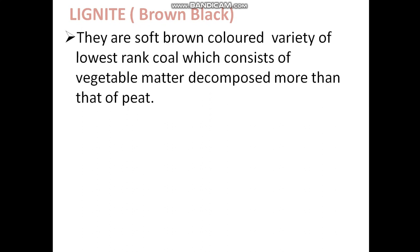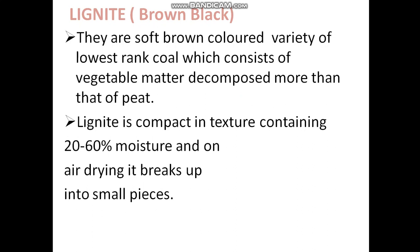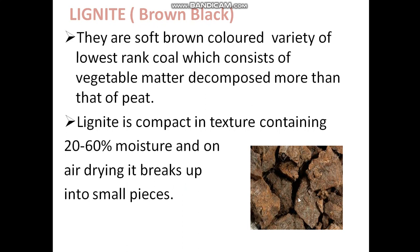This was all about peat. Next, let's look at lignite. Lignite is brown-black — a soft, brown-colored variety of the lowest rank coal, which consists of vegetable matter decomposed more than peat. Lignite is compact in texture, containing 20 to 60 percent moisture, and on air drying, it breaks up into small pieces.